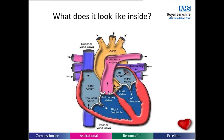The heart is a pump taking deoxygenated blood to the lungs. Oxygenated blood returns to the heart to be pumped around the body. The heart has its own rich blood supply called the coronary arteries, which deliver oxygenated blood to the heart muscle. The heart is made up of four chambers and four valves which allow blood flow through the chambers. The right side pumps blood to the lungs and the left side pumps blood to the body via the aorta.